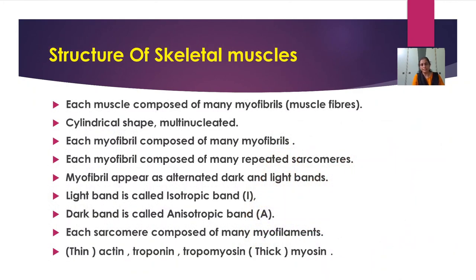Now, the structure of skeletal muscles: each muscle is composed of many myofibrils, that is, muscle fibers. These muscle fibers are cylindrical in shape and multi-nucleated. Each myofibril is composed of bundles of myofibrils, which form the muscle fibers. Each myofibril is composed of many repeated sarcomeres. We will see what these sarcomeres are in the next slide.